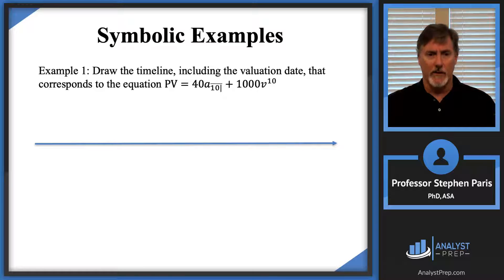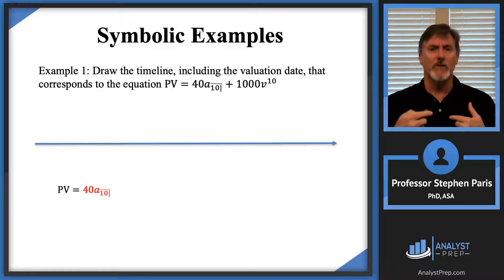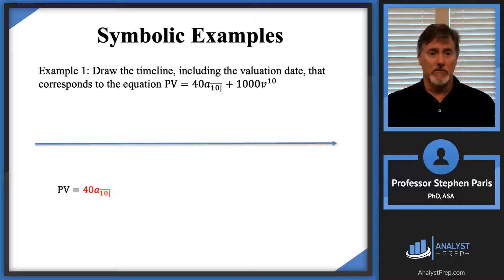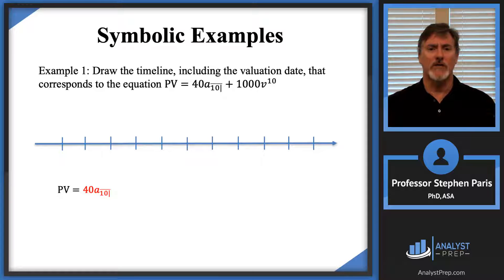I'm going to start with a timeline. What I encourage you to do when thinking about this is to look at the term that has the annuity symbol in it first. When looking at that present value expression, I'm focusing my attention on the 40 times the a-angle-10. So that means I'm going to be valuing 10 payments of 40, and I'm going to have a bunch of tick marks on my timeline because I have to put in 10 payments of 40. It gives me a value one period before the first of those 10 payments.